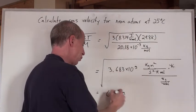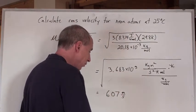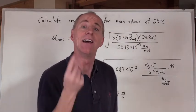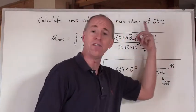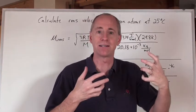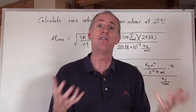And then this number here, the square root of that is 607. So the answer is 607 meters per second. That's how fast neon is going in a 25 degree Celsius, or 298K, environment.